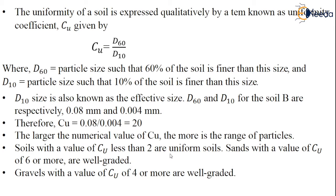The uniformity of a soil is expressed qualitatively by a term known as uniformity coefficient Cu, which is equal to D60 by D10. D60 is the particle size such that 60% of the soil is finer than that size, and D10 represents the particle size such that 10% of the soil is finer than that size. This D10 size is also known as effective size.